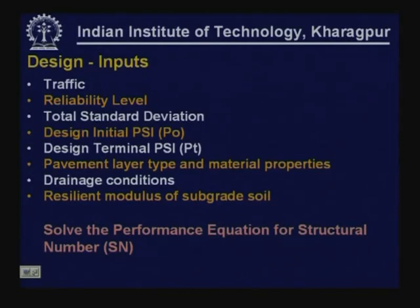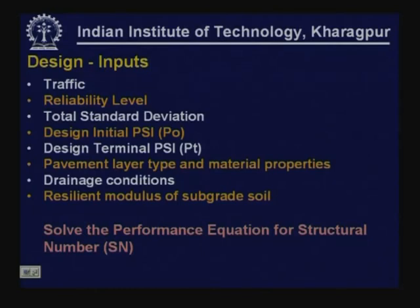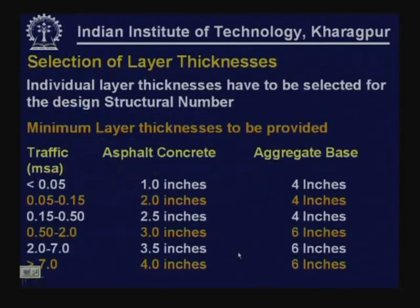Design inputs required for AASHTO flexible pavement design include: traffic (W18), reliability level, overall standard deviation SO, initial PSI (typically 4.2 depending on construction practice), terminal PSI PT (1.5 to 2.5 depending on road class), pavement layer types and material properties, drainage conditions, and subgrade resilient modulus MR. All these inputs are substituted into the performance equation to solve for the required structural number SN, which is then decomposed into individual layer thicknesses.